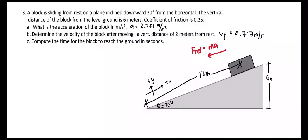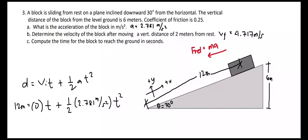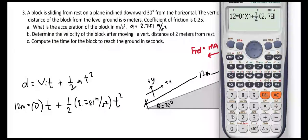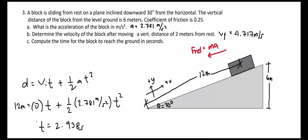To solve for the time, we use the kinematic equation: d = vi·t + ½·a·t². Plugging in the known values: 12 meters equals an initial velocity of 0 times t, plus one half of the acceleration 2.781 m/s² times t². Solving for t, we get the time for the block to reach the ground equal to 2.938 seconds. This is the final answer for the last problem.